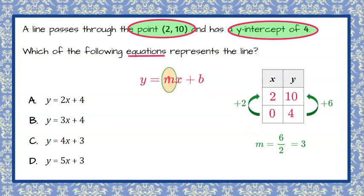So now we go back, and we remember that we have to replace m with our slope, which is 3, and b is our y-intercept, which is 4. So we're going to replace m with 3, and b with 4, and we get the line y equals 3x plus 4, which is answer choice b.